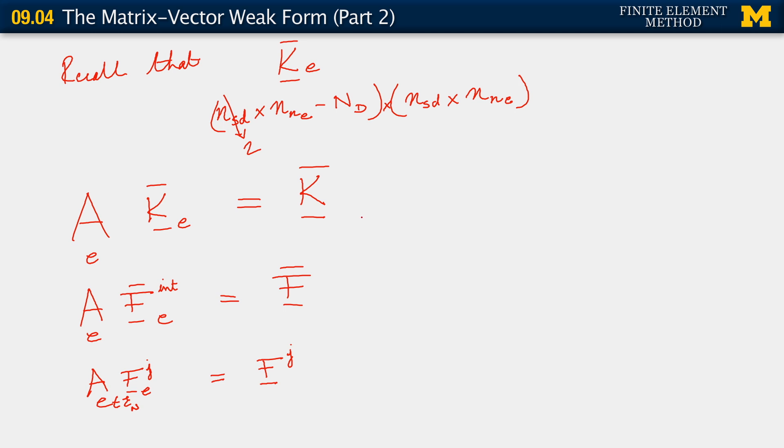I just realized that what I did here for the dimensions of k bar e actually applied to k bar. This is corresponding to k bar. So we observed that k bar is a rectangular matrix, it's not square. And we know why it's not square, because there are fewer degrees of freedom corresponding to the trial solution vector.